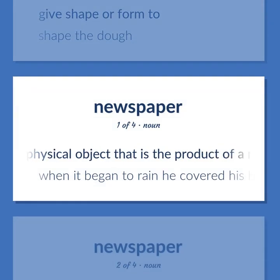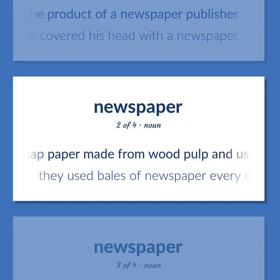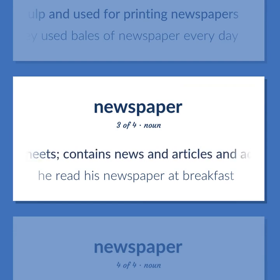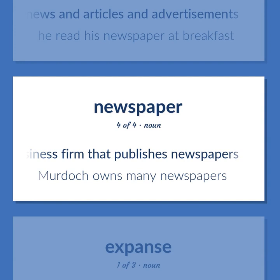Newspaper. The physical object that is the product of a newspaper publisher — when it began to rain he covered his head with a newspaper. Cheap paper made from wood pulp and used for printing newspapers — they used bales of newspaper every day. A daily or weekly publication on folded sheets, containing news and articles and advertisements — he read his newspaper at breakfast. A business firm that publishes newspapers — Murdoch owns many newspapers.